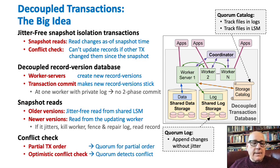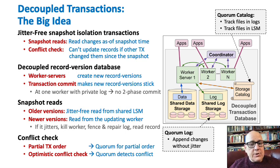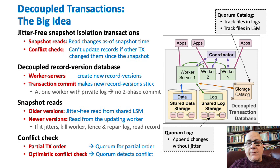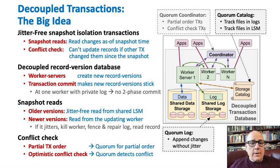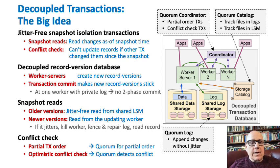Conflict check has two parts. First, you have to order the transactions with a partial order, and you can do that with Quorum. Then you need to do conflict checking for updates not bumping into each other, and you can use Quorum to do that too. Here we see a Quorum coordinator that does partial ordering of transactions and conflict checking of transactions.